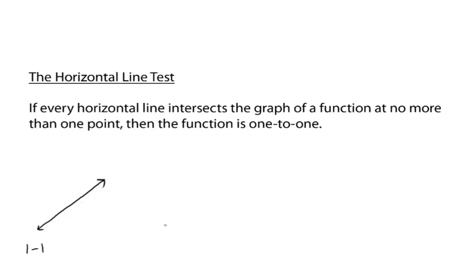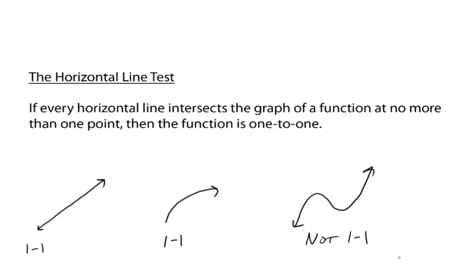If you have, say, our square root function again, it is a function that passes the vertical line test. Now, what about the horizontal line test? Each horizontal line only hits your graph one time, so yes, it's a one-to-one function. But that third one we did — is this the graph of a function? Yes, it's the graph of a function. Is it the graph of a one-to-one function? No, because you can find one horizontal line that intersects your graph more than one time, so this is not one-to-one. But in order for a function to be one-to-one, it has to be a function to begin with. This thing right here, sure, it passes the horizontal line test, but it was never a function to begin with, so it's not a one-to-one function. It has to pass the vertical line test first and then the horizontal line test second.